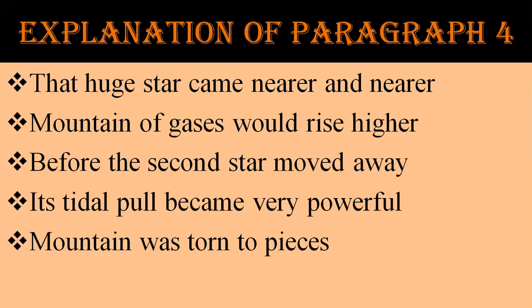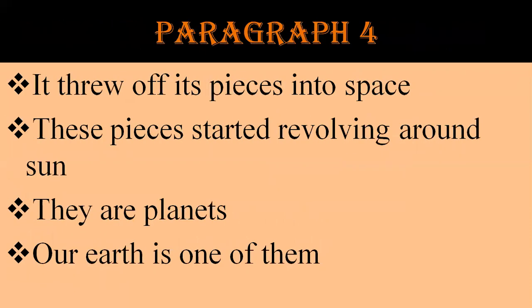In this paragraph the writer tells us that a huge star came nearer and nearer and a mountain of gases rose higher and higher on the surface of the sun. Before the second star moved away, its tidal pull became very powerful and that mountain was torn to pieces — pieces of the sun itself. These pieces started revolving around the sun and they are the planets, and our earth is one of them.